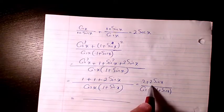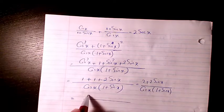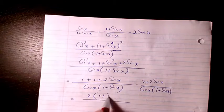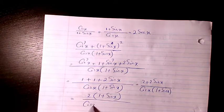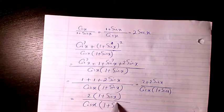So here we can factor 2. It's going to be 2 times 1 plus sine x, and we have cosine x times 1 plus sine x.